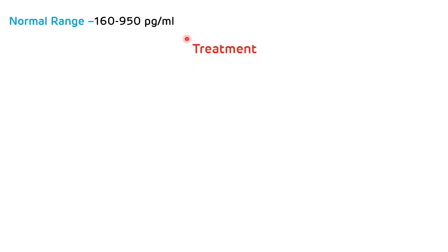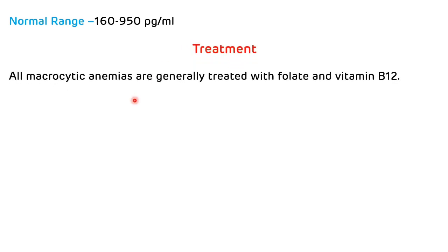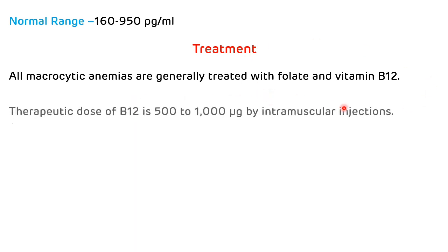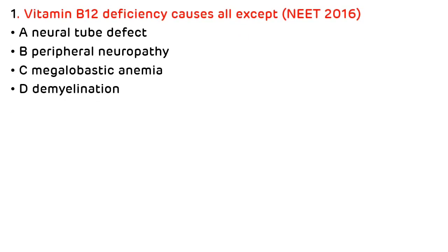Treatment of vitamin B12 deficiency: All megaloblastic anemias are generally treated with folate and vitamin B12. Therapeutic doses of vitamin B12 are 500 to 1000 micrograms by intramuscular injection.